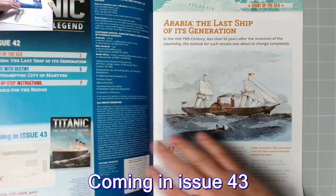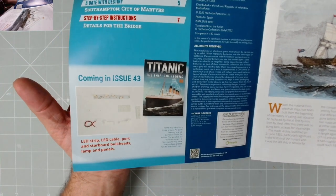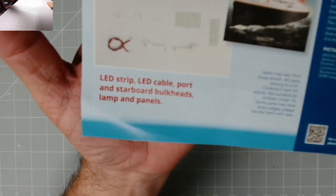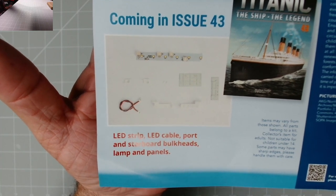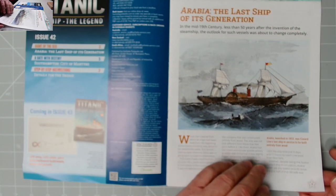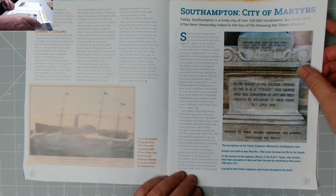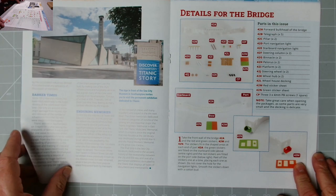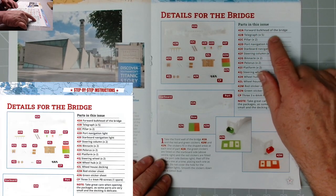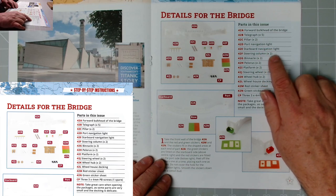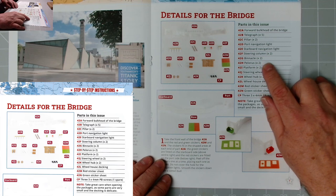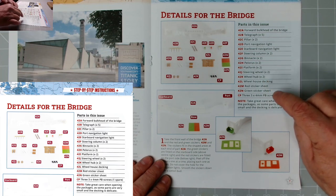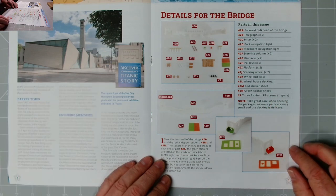Now let's have a look at the magazine, issue 42. Let's see what's coming in issue 43. We have an LED strip, LED cable, port and starboard bulkheads, lamp and panels. Excellent stuff. Then on to the stories, Arabia, the last ship of its generation. Moving on to Southampton, city of martyrs. Then we have the instructions. Details for the bridge: forward bulkhead, five telegraphs, two pillars, port and starboard navigation lights, steering columns times two, binnacles times two, pelarus times two, platforms times two, steering wheels times two, wheel hubs times two, wheelhouse decking, red sticker sheet, green sticker sheet, and three PB screws.